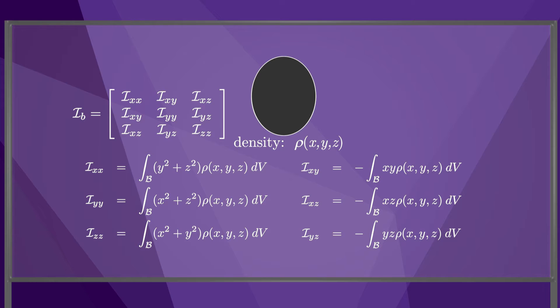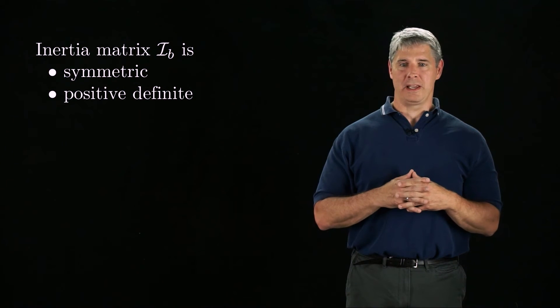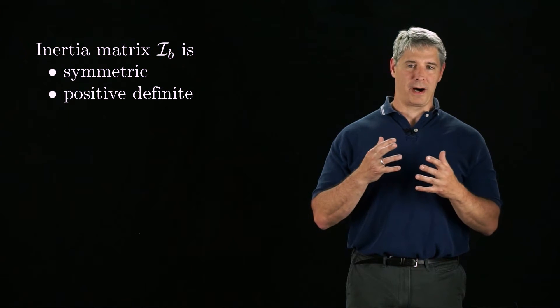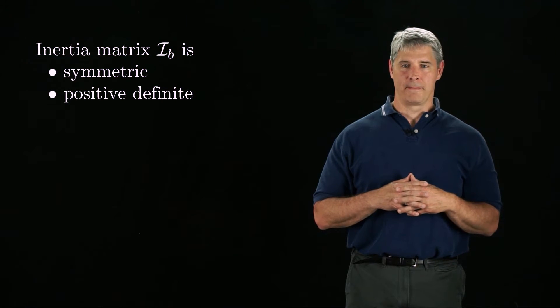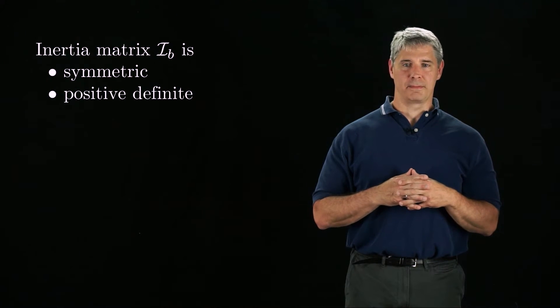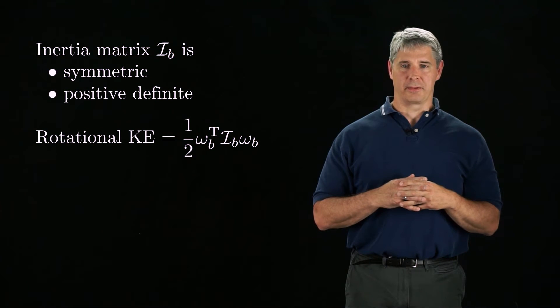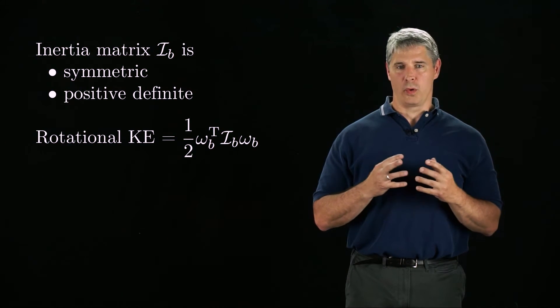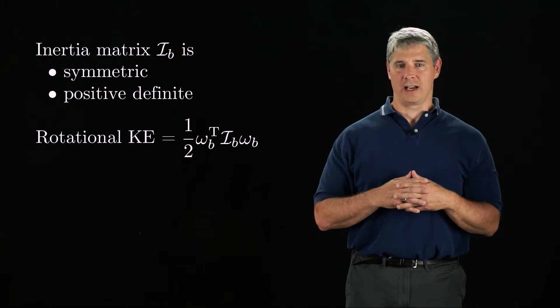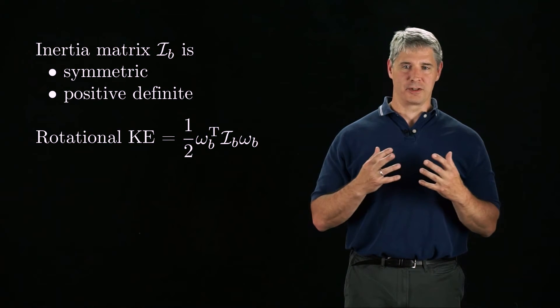In the book you can see some simplified formulas for calculating the inertia matrix of some common bodies. Just like the mass matrix for a robot, the inertia matrix ib for a rigid body is symmetric and positive definite. Similarly, the kinetic energy for a rotating rigid body is one-half omega-b-transpose times ib times omega-b.